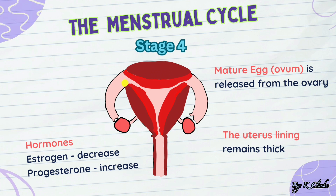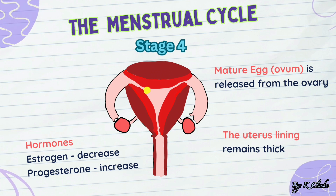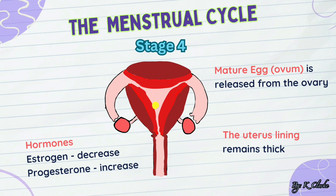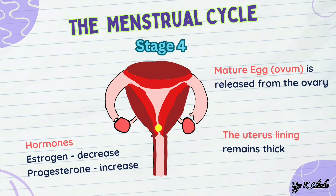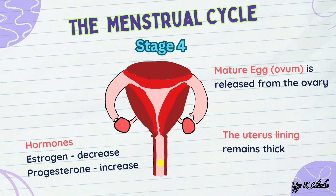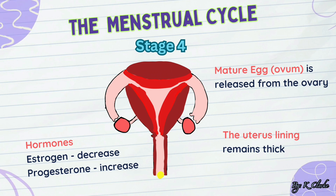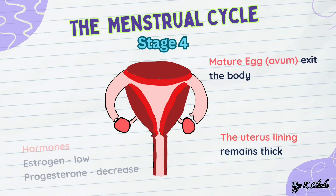Stage four: the egg moves through the oviduct and enters the thick uterus. As the egg moves, the level of estrogen decreases while the level of progesterone increases. What is another name for vagina? Its birth canal.